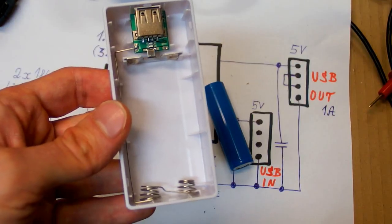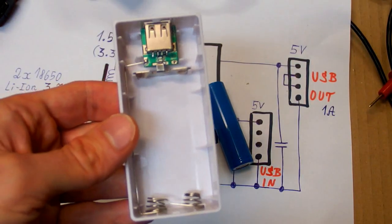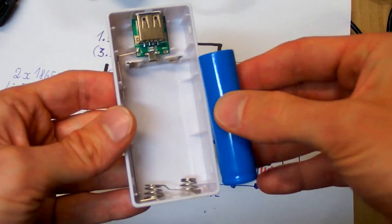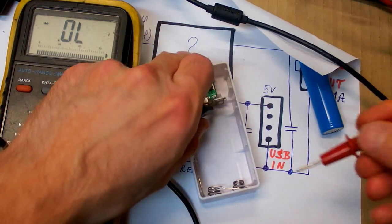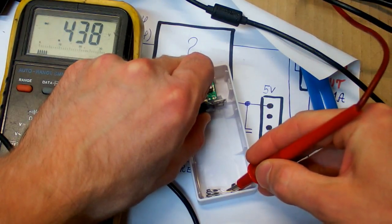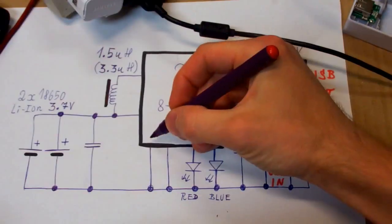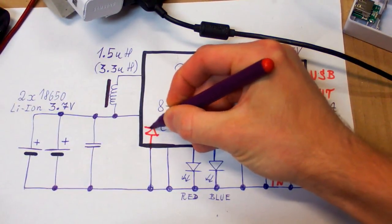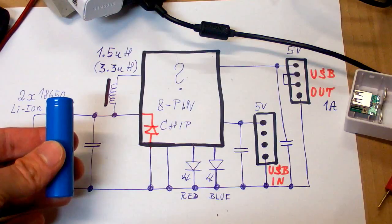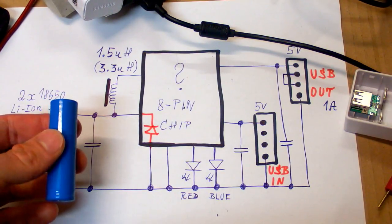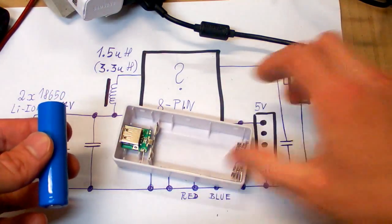So those power banks are quite nice. But there is one possible trap. You can easily put the batteries in it the wrong way. There seems to be no polarity protection. Because the chip is acting like a diode in reverse. So it's acting about like this. So putting the battery in reverse will cause a short circuit. And this will probably destroy the battery or the power bank.